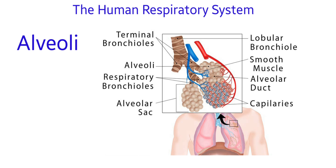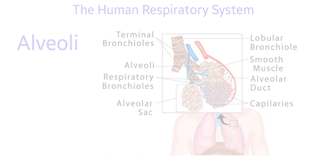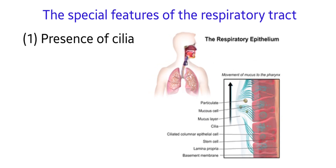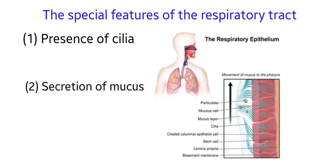There are about 300 million alveoli in one set of human lungs. Alveoli are the respiratory surface of a human. The respiratory tract has special features: numerous cilia are present on the lining of the nasal cavity. The epithelium lining the inside of the trachea, bronchi, and bronchioles consists of ciliated cells. There are also cells which secrete mucus. Due to the presence of mucus in the nasal cavity, its lining is moist. Dust particles and bacteria become trapped in the sticky mucus film, and the mucus is carried upwards away from the lungs by the movements of the cilia.